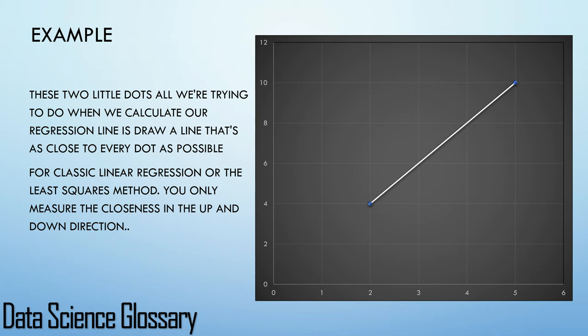All we are trying to do when we calculate our regression line is draw a line that's as close to every dot as possible. For classic linear regression or the least squares method, you only measure the closeness in the up and down direction. Here we have a perfectly fitted line because we only had two points.